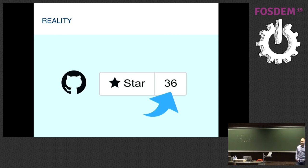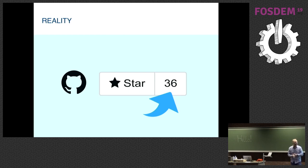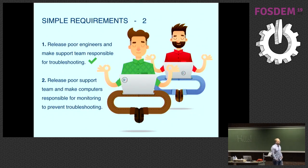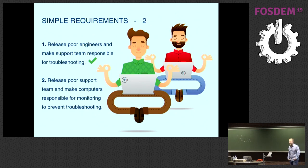But we didn't give up — that's why I'm here now. We just took a break, kept working on our main projects and activities, and meanwhile we were collecting information about what large VoIP providers want to see in this type of product. We came to simple requirements number two: release the poor engineers, make the support team responsible for troubleshooting; then release the poor support team and make computers responsible for monitoring to prevent troubleshooting. What did we do? We built SIP3. SIP3 is the next version of Tapir, and now it will be the brand and product name we work on and develop.